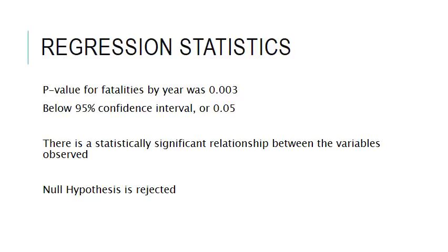Regression statistics were used to determine the statistical significance of the data analyzed. The data used for this calculation was the total number of fatalities in the agricultural industry organized by year. The resulting p-value was 0.003, which is below the 95% confidence interval threshold of 0.05. This indicates a statistically significant relationship between the variables observed. Therefore, the null hypothesis that there has been no statistically significant change in the number of fatalities from 2005 to 2014 can be rejected.